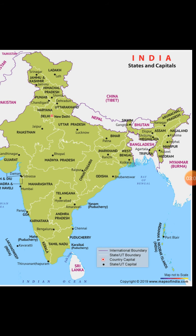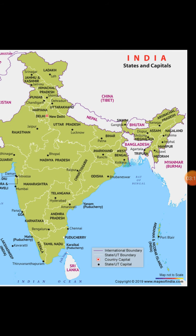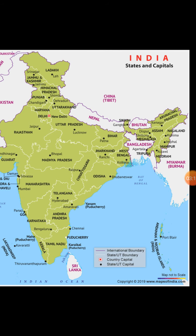The capital of Andhra Pradesh is Amaravati, Telangana's capital is Hyderabad, Chhattisgarh's capital is Raipur, Odisha's capital is Bhubaneswar, Jharkhand's capital is Ranchi, and West Bengal's capital is Kolkata. Now for the Northeast states: Arunachal Pradesh's capital is Itanagar, Assam's is Dispur, Meghalaya's is Shillong, Nagaland's is Kohima, Manipur's is Imphal, Mizoram's is Aizawl, and Tripura's capital is Agartala.